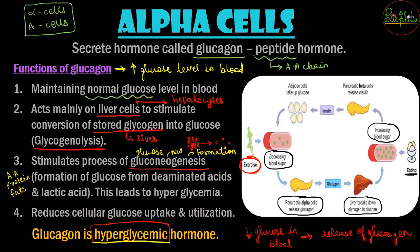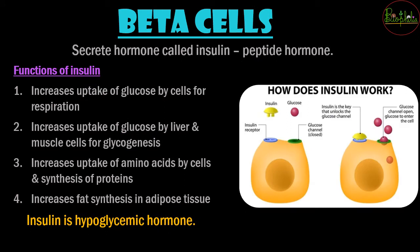The opposite condition can also occur — if the person is eating a lot, blood sugar level increases. Then, instead of alpha cells, the beta cells are stimulated to release the second hormone from the pancreas, that is insulin. Beta cells, also called B cells, secrete insulin when blood glucose levels rise. Insulin is also a peptide hormone.